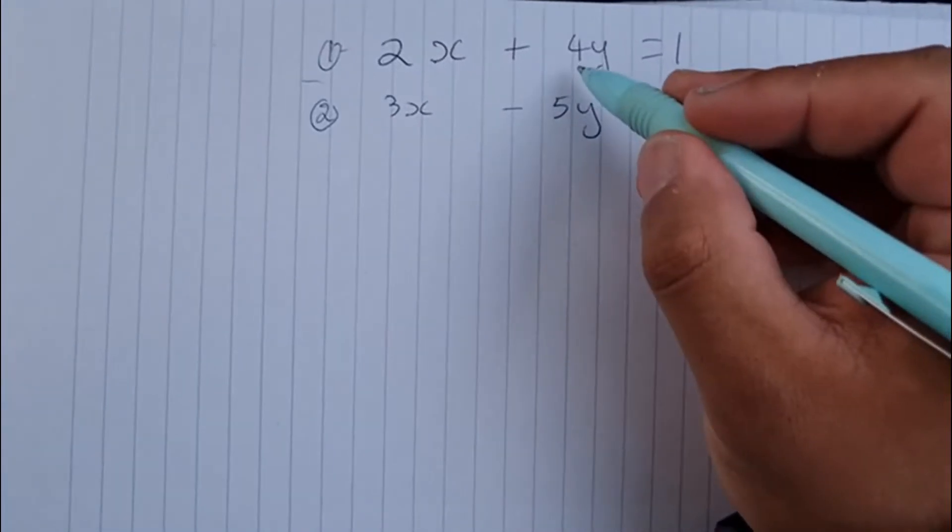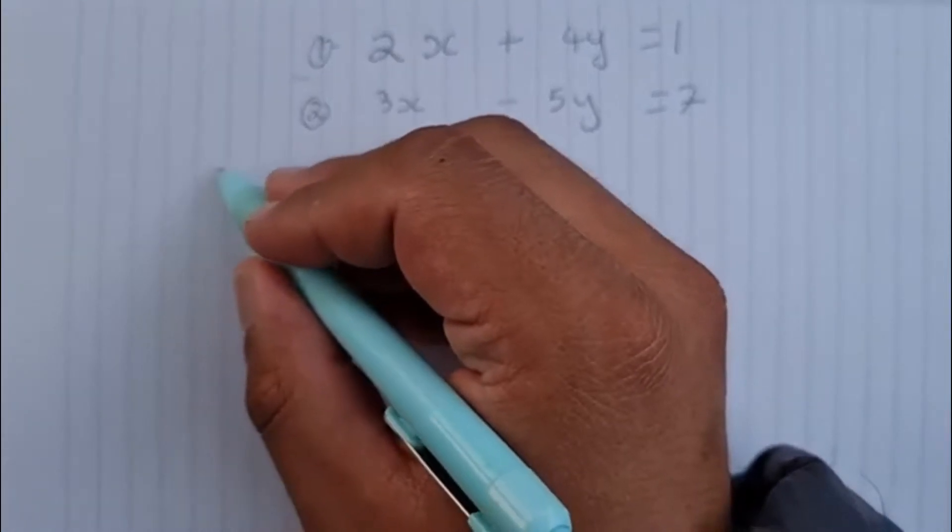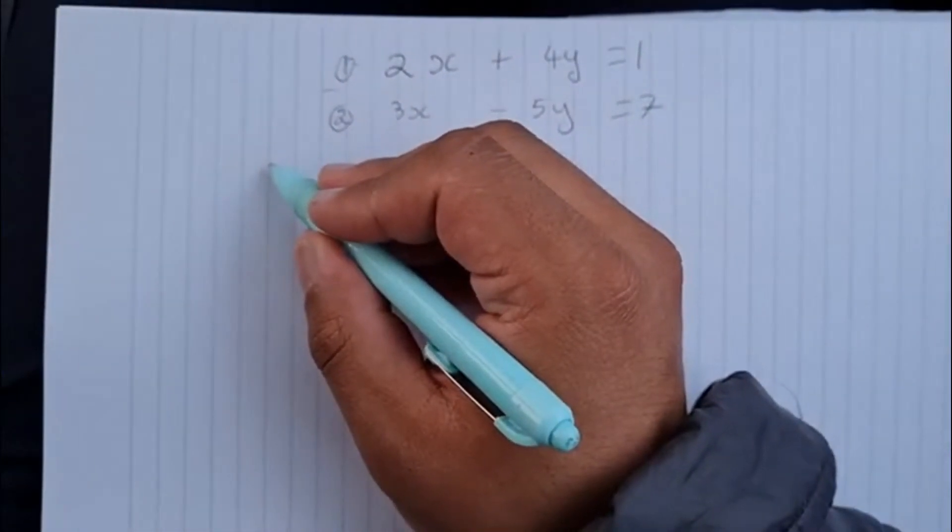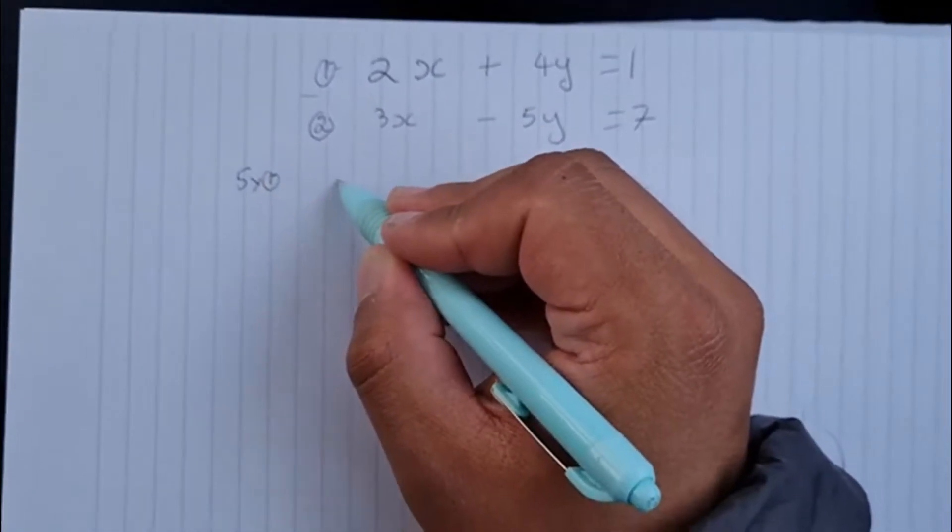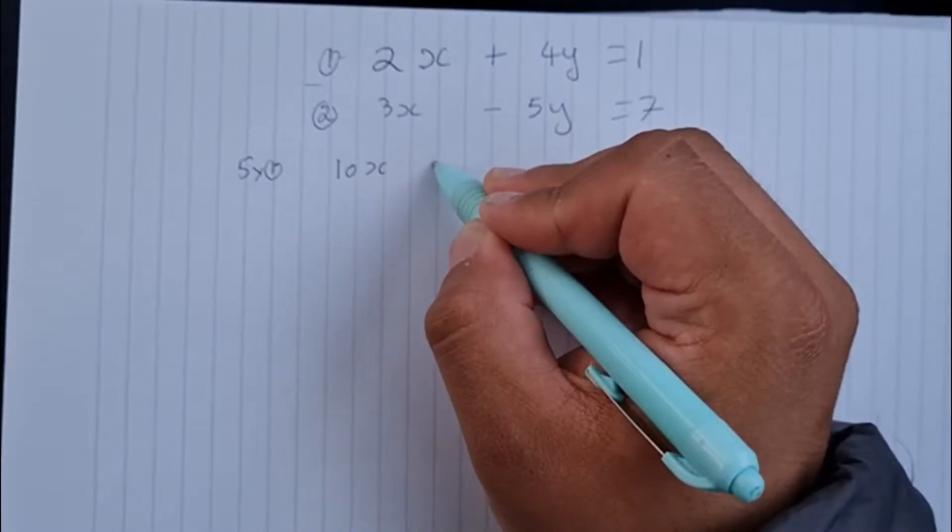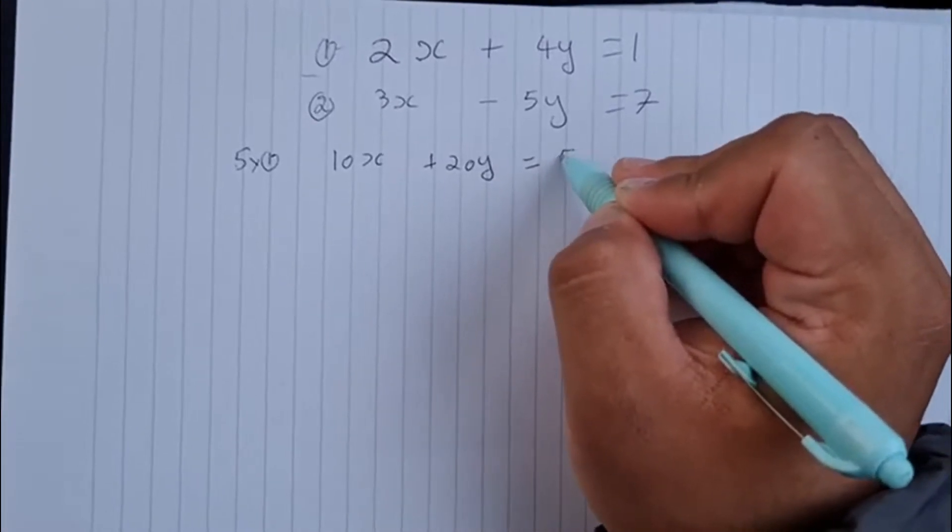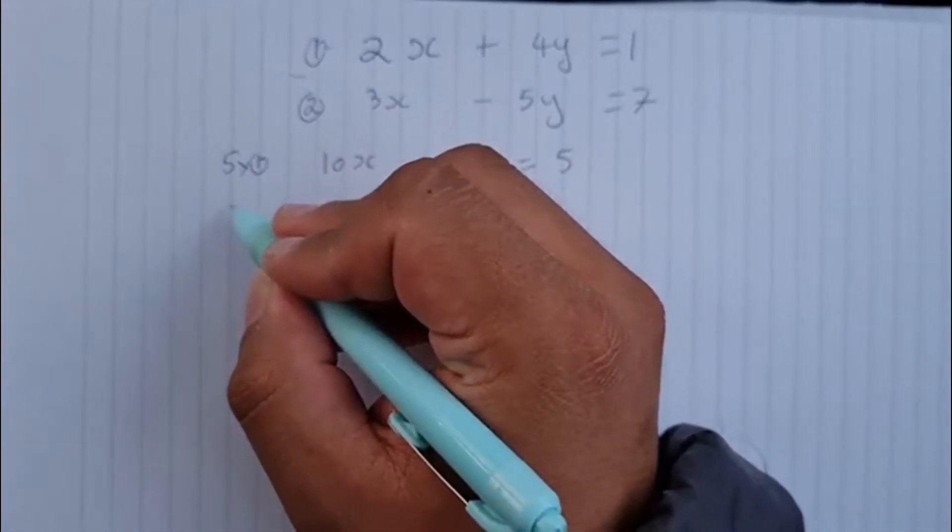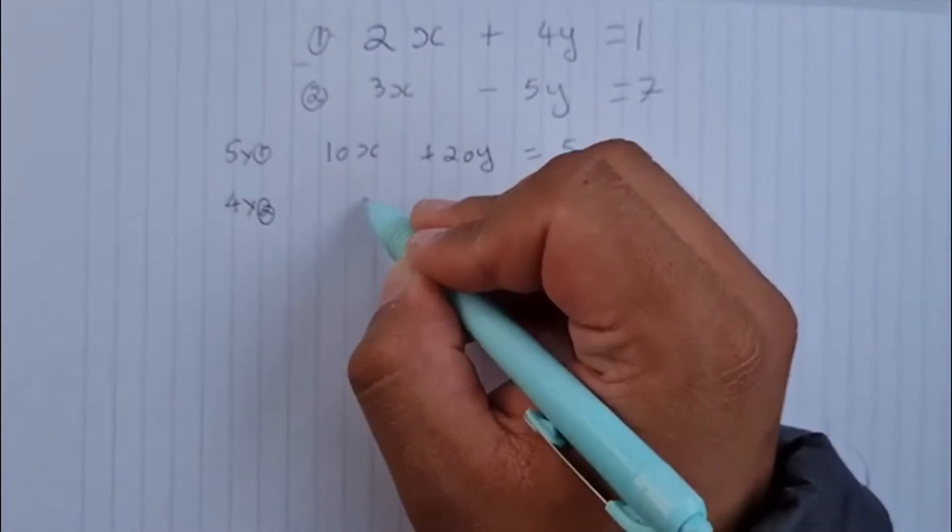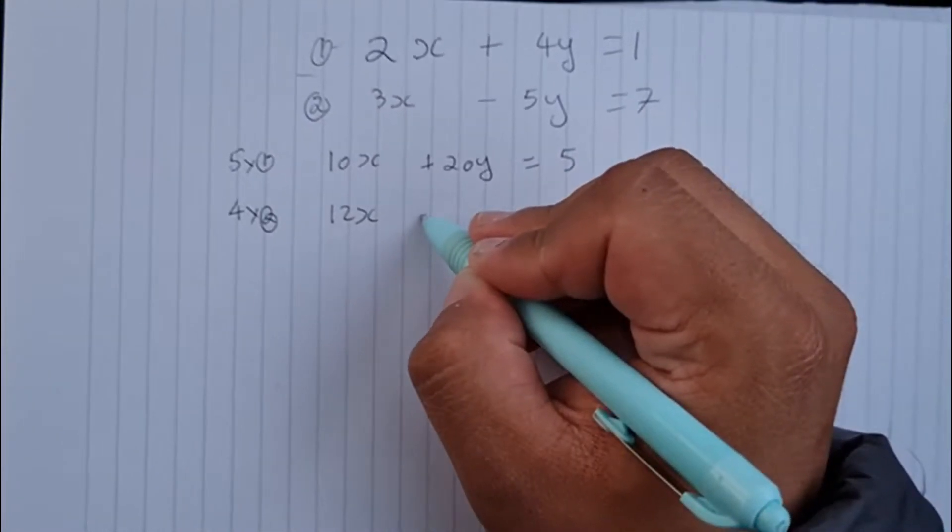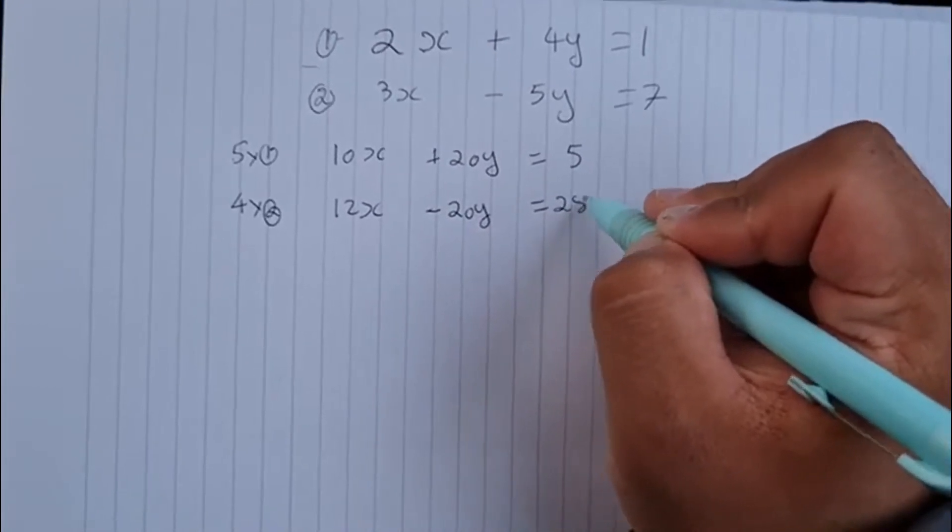Now, my aim is to make the coefficients of y the same. So I'm going to multiply my first equation by 5, which will give me 10x plus 20y is equal to 5. And I'm going to multiply the second equation by 4, which will give me 12x minus 20y equals 28.